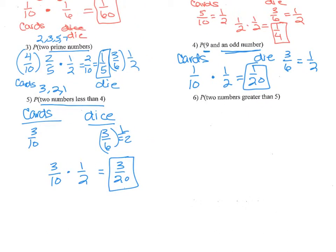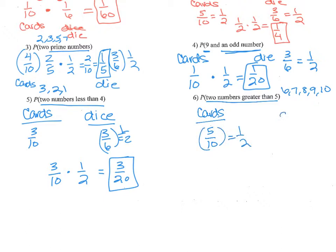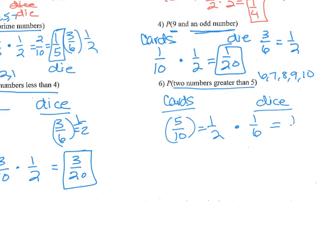Last one: the probability of two numbers greater than five. Numbers greater than five from our ten cards are six, seven, eight, nine, ten — five out of ten, which reduces to one half. On the dice, only six is greater than five — one out of six. Multiply one half times one sixth to get one twelfth.